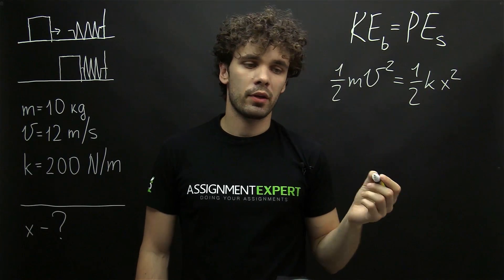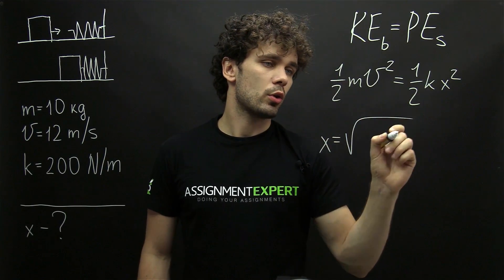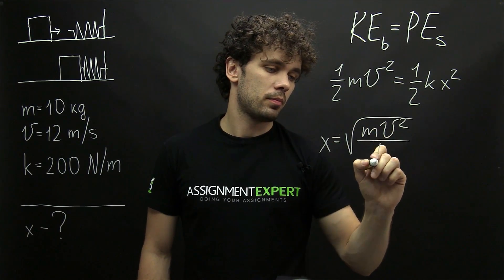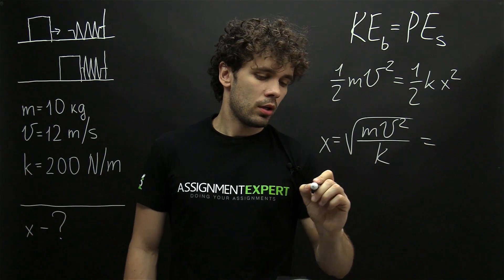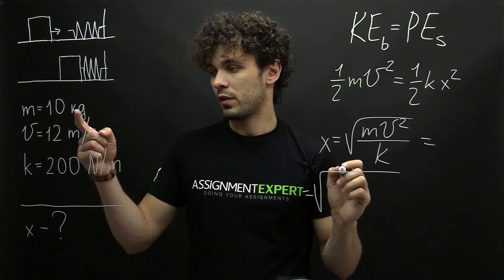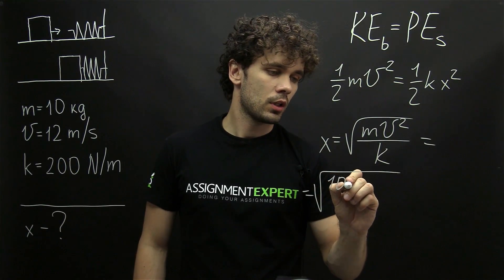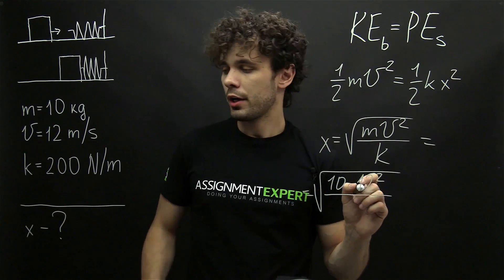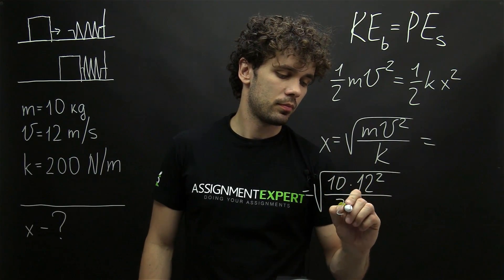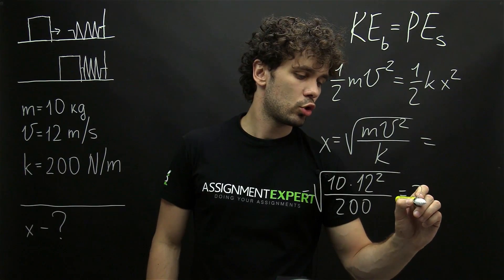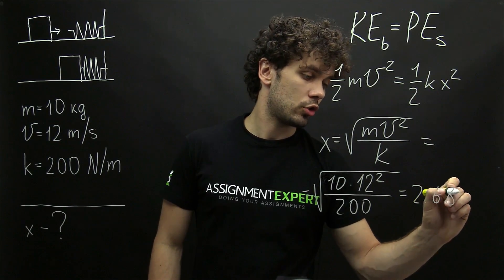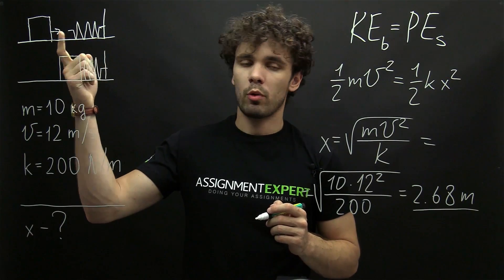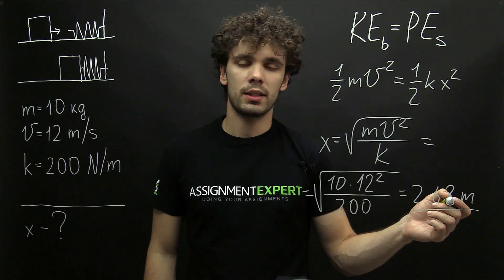From here we can derive the compression x as the square root of mv squared over k. And this gives us the square root of 10 times 12 squared divided by 200, which is equal to 2.68 meters. So after the collision of the spring with the block, the compression is 2.68 meters.